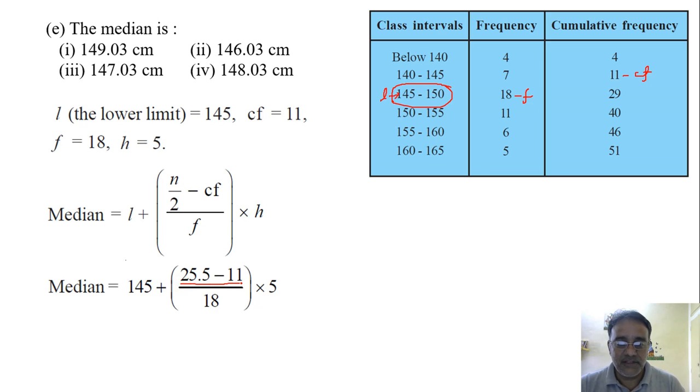We will subtract this, then divided by 18. If we divide 72.5 by 18, we will get approximately 4.03. So if we add with 145, we will get 149.03. So the first option is the correct answer.